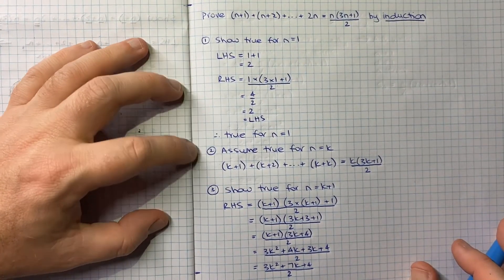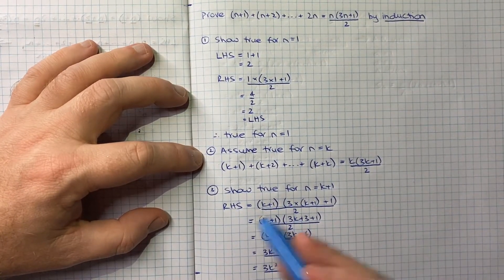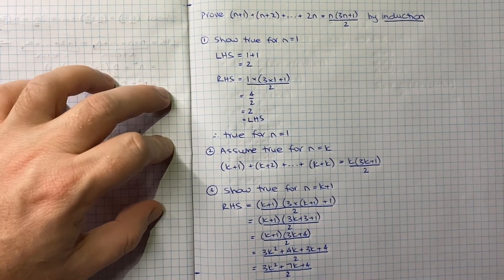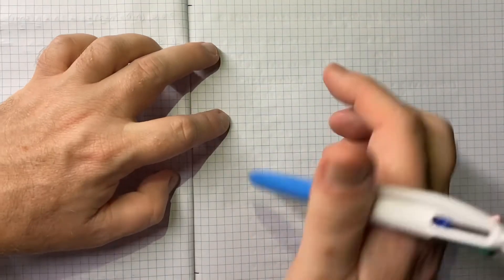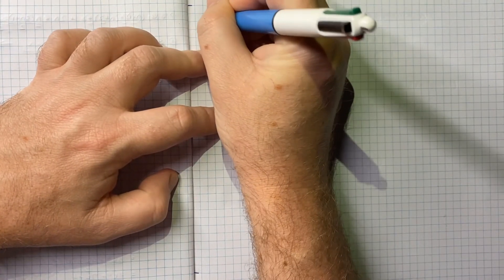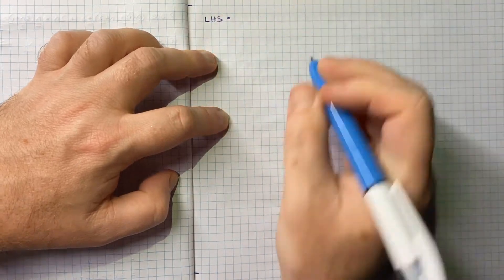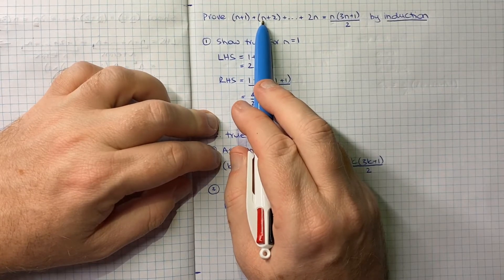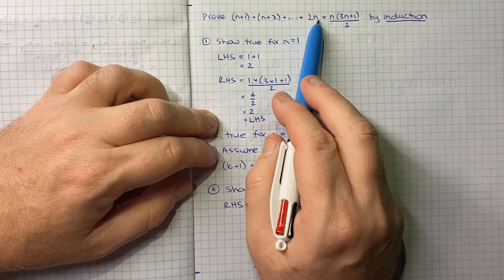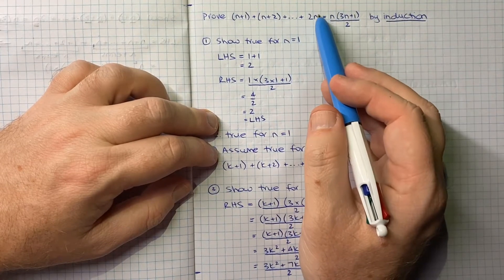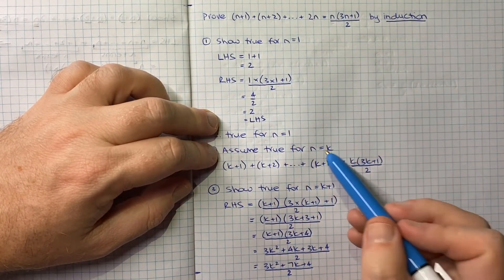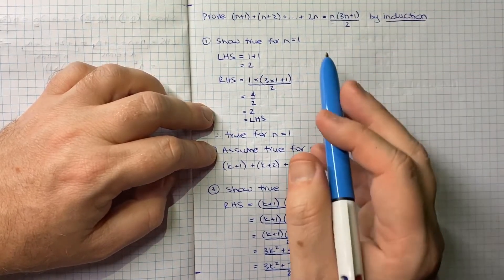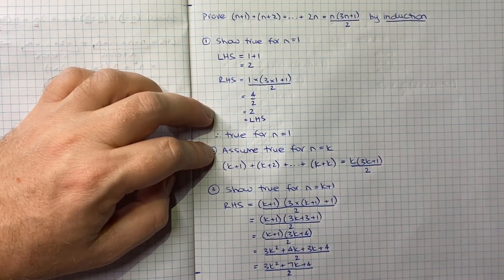So (3k²+7k+4)/2 is what we get for the right hand side. Now let's look at how we can show the left hand side gives the same thing. The key is to be really careful with how we write the left hand side, because wherever we see n we want to put k+1, noting that n also represents the number of terms. So with k+1 there's an extra term tacked on at the end.